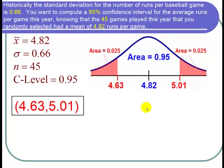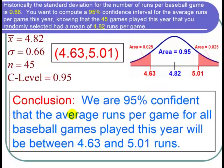We're ready to state our conclusion. We can conclude that we are 95% confident that the average runs per game for all baseball games played this year will be between 4.63 and 5.01 runs.